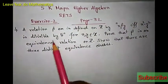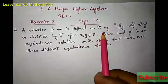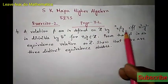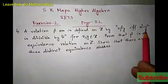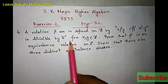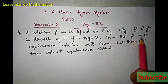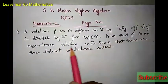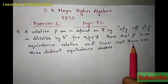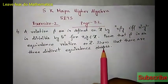The problem says: a relation beta is defined on Z by x related to y if and only if x squared minus y squared is divisible by 5, for all x, y belonging to Z. Prove that beta is an equivalence relation on Z and show that there are three distinct equivalence classes.